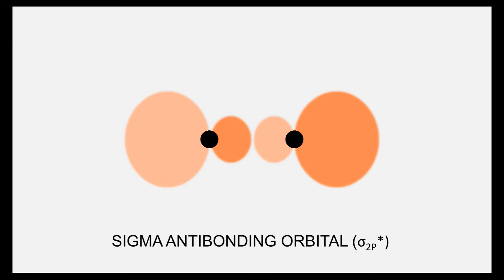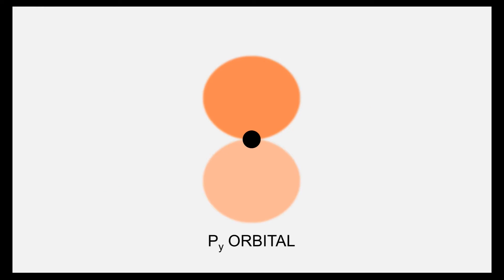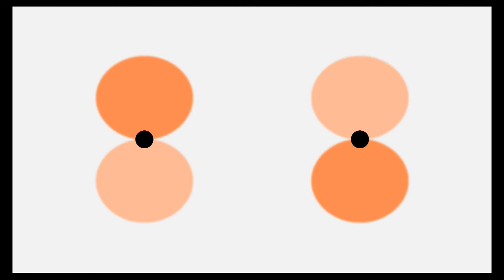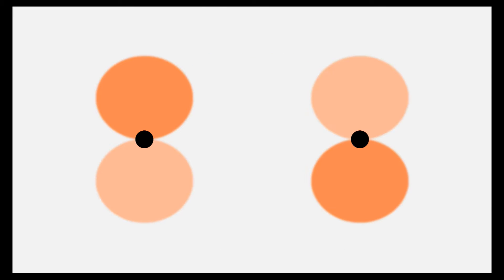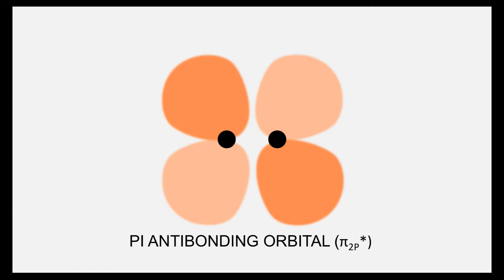But we could also add these side to side, ending up with the electron density above and below the nuclei — these are pi bonding and anti-bonding orbitals. You can also add s and p valence orbitals to form sigma bonding and anti-bonding.